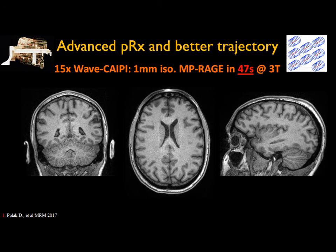Here is a recent result where we applied joint optimization to a sequence designed by Daniel Pollack, where Wave CAIPIRINHA was included into MP-RAGE. Shown here are 15x accelerated results for one-millimeter isotropic data acquired in only 47 seconds at 3T using a 64-channel custom array coil.